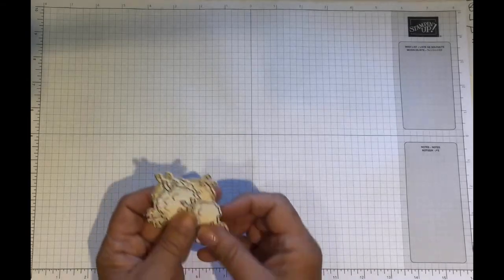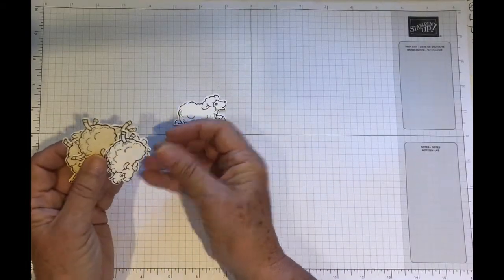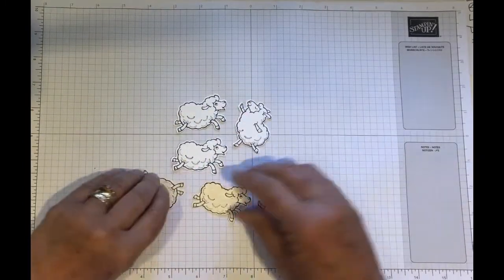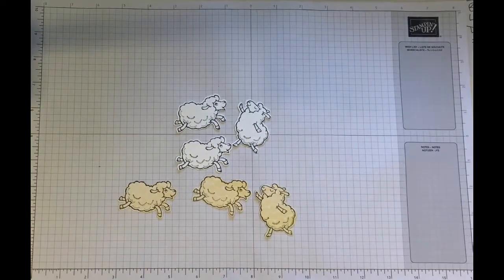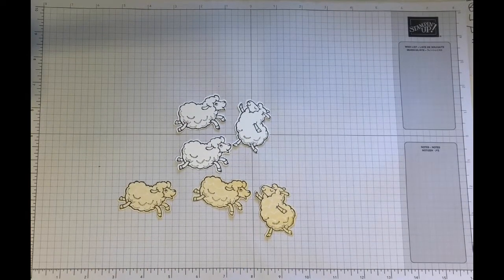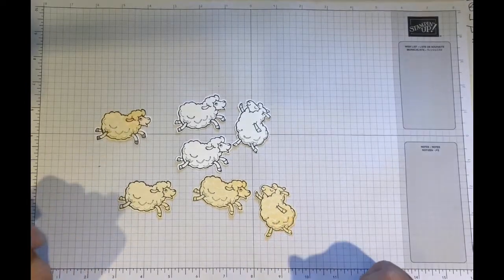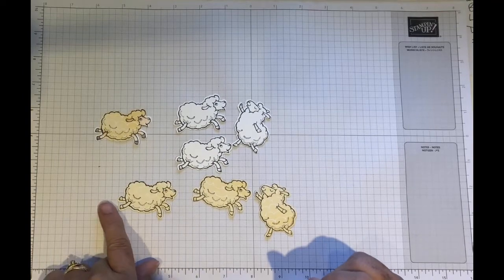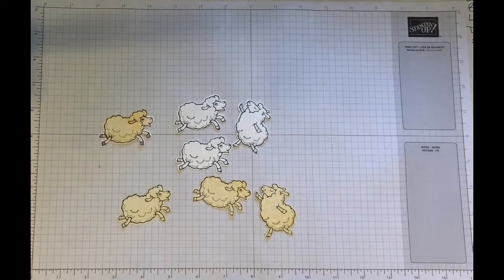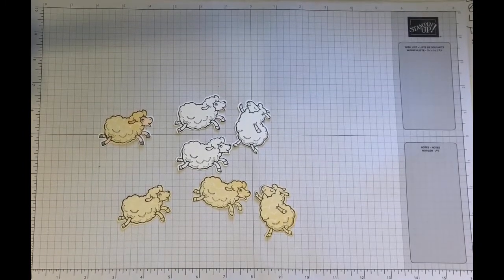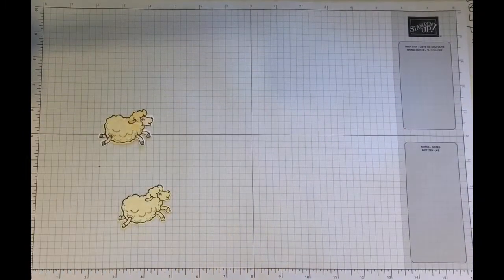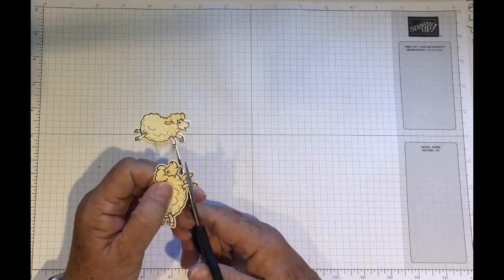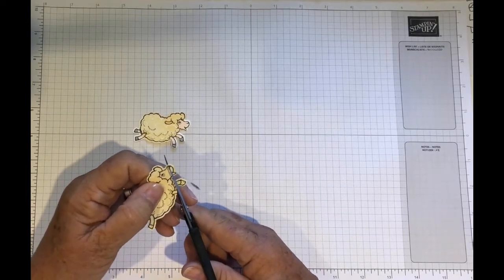So in Blue Peter fashion, here we are. Three of the white sheep and three with the woolly coats. And what we need to do is we need to fussy cut the colored sheep. We need to take the face and the legs off. Sounds quite drastic, but that's what we need to do. So it's quite easy.